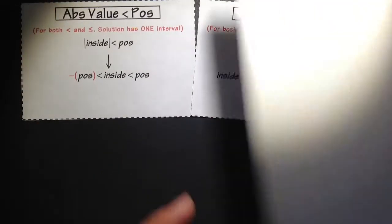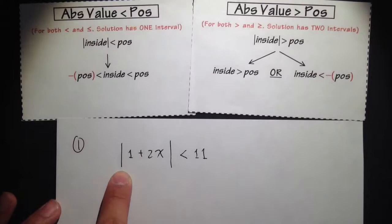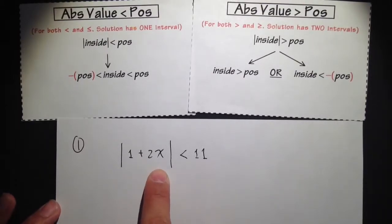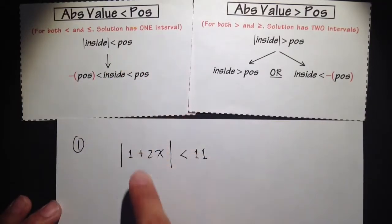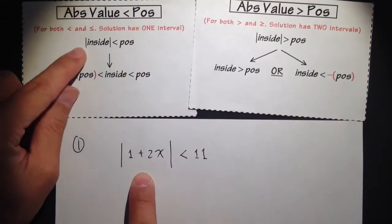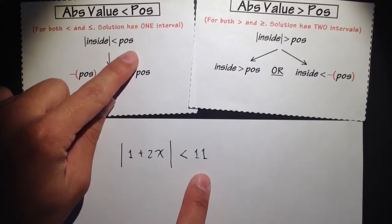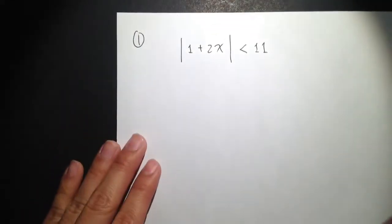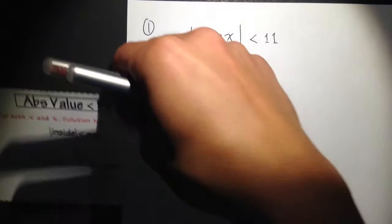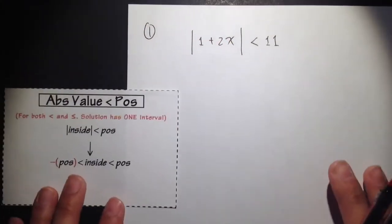The first example I would like to do is the absolute value of 1 plus 2x, less than 11. This is that situation where we have an absolute value of something inside and it's less than a positive number. So let's see how we can solve this inequality.